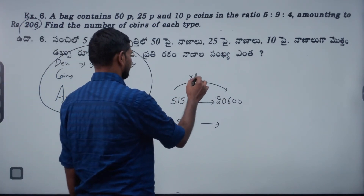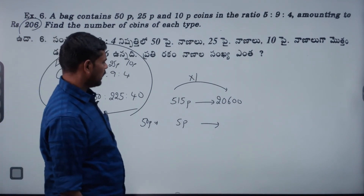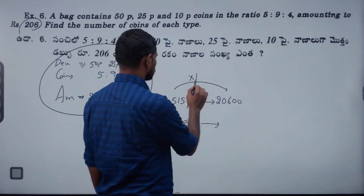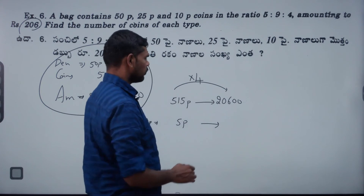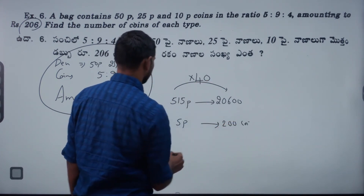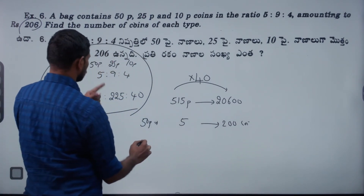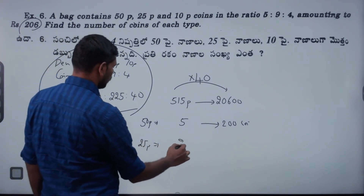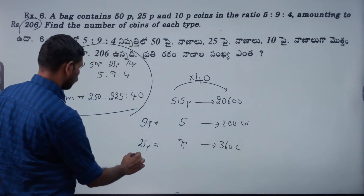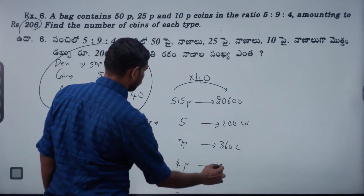Cancellation: 515 by 515, both cancel. So 514 direct 2060, 515 into 2060 — 540's gives 200 coins. 55 is 5 parts. Next: 25 parts — 9 parts — 9 into 40 is 360 coins. Next: 4 parts — 4 into 40 is 160 coins.